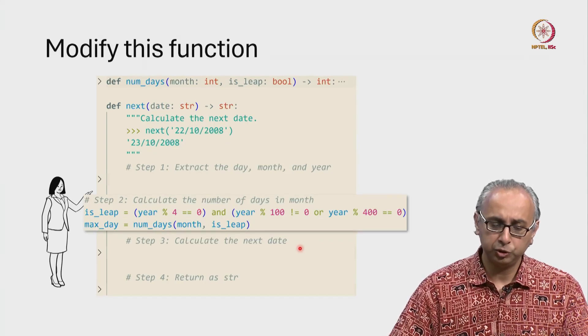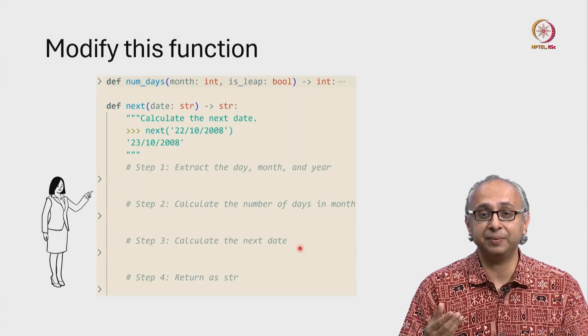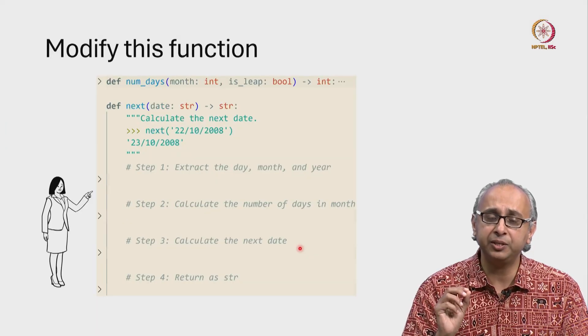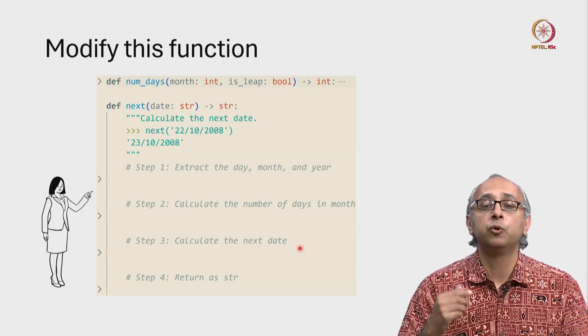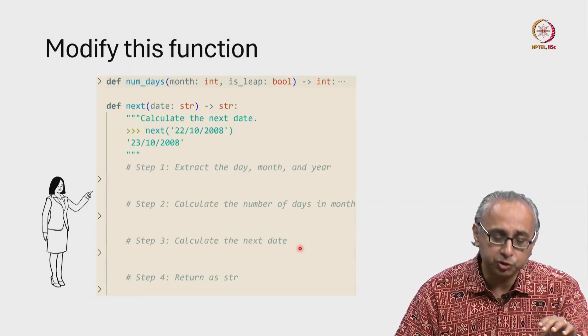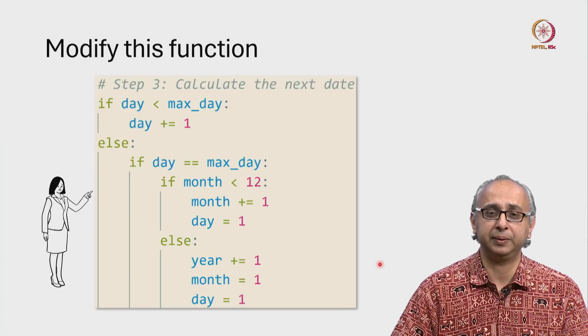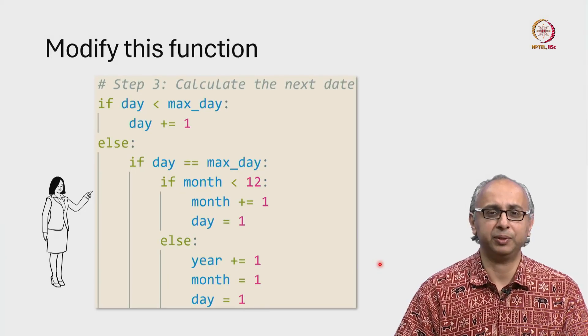Let's move on to step 3. Here we actually have to calculate the next date. So we have all our date fields hopefully as integers, and we know what the maximum number of days is for this particular month using the helper function. And now let's zoom in on this code. This is what this code looks like. And our client is not happy with this code. Our client wants us to improve the readability of this code.